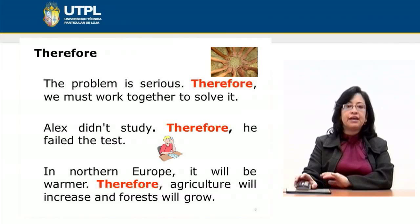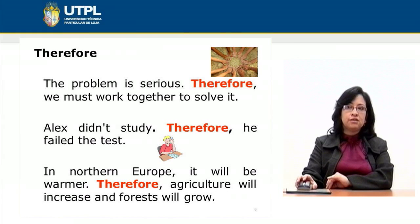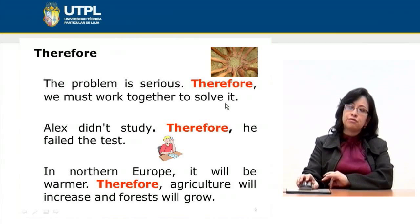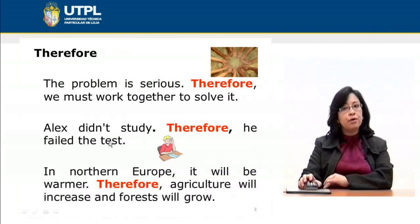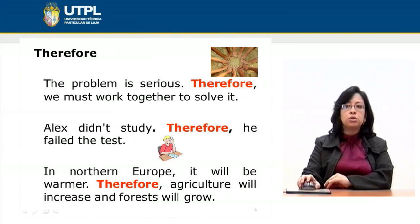Now, to present the effect or the result we use the transition 'therefore.' For example: 'The problem is serious; therefore we must work together to solve it.' The effect is that we must work together because the problem is serious. Then: 'Alex didn't study; therefore he failed the test.' Alex not studying is the reason, and failing the test is the result. In the last example: 'In Northern Europe it will be warmer; therefore agriculture will increase and forests will grow.' Again, 'therefore' presents the result.